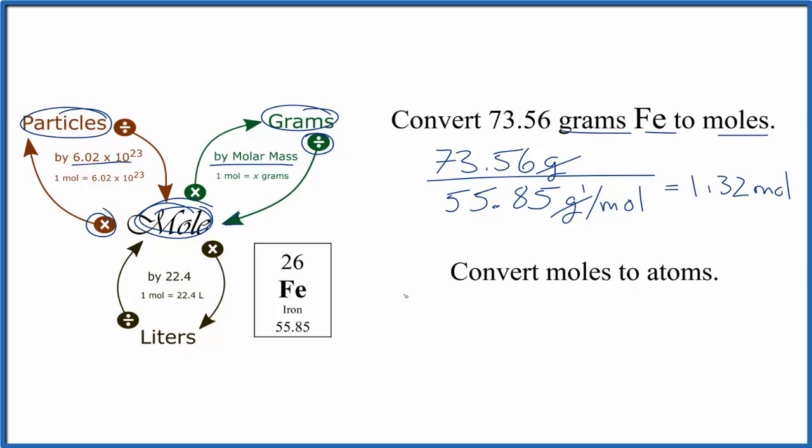So we have 1.32 moles of iron. We're going to multiply that by Avogadro's number, and that's 6.02 times 10 to the 23rd particles. We're talking about atoms in 1 mole.